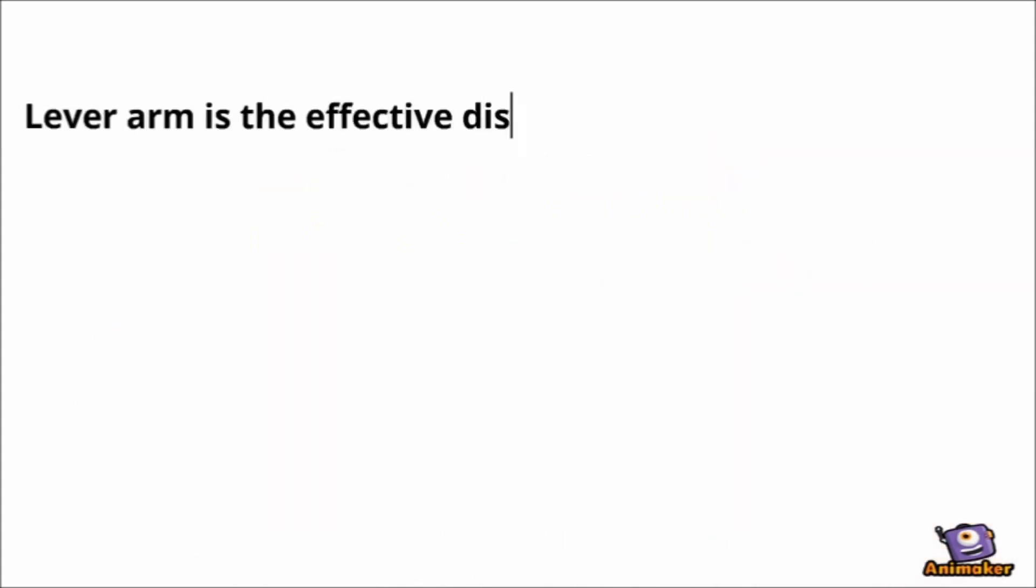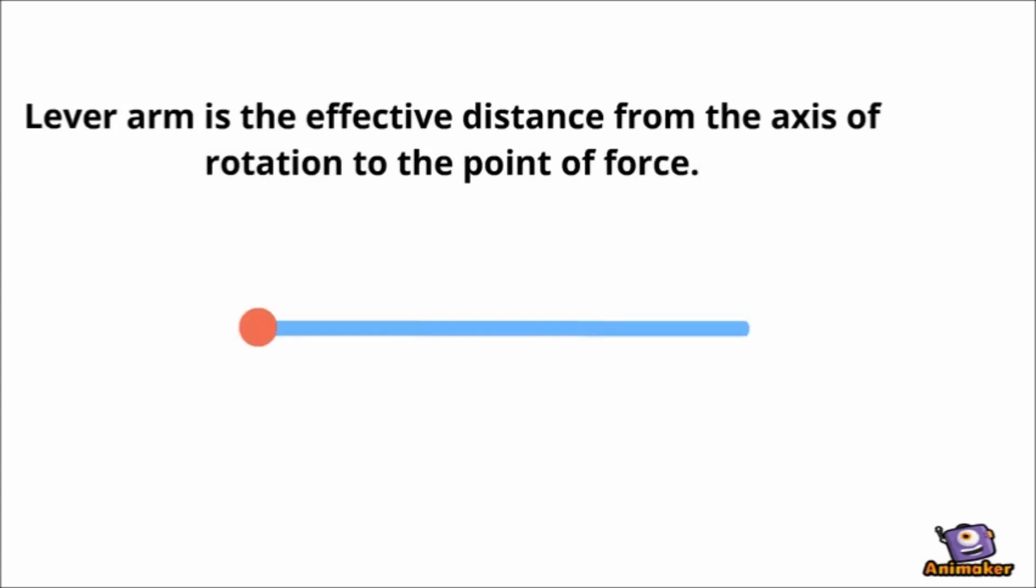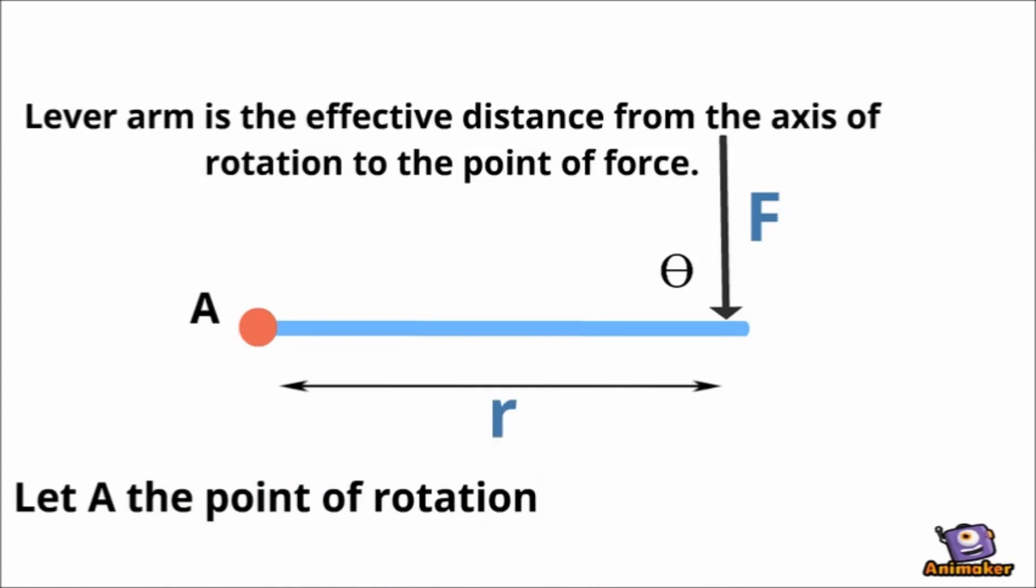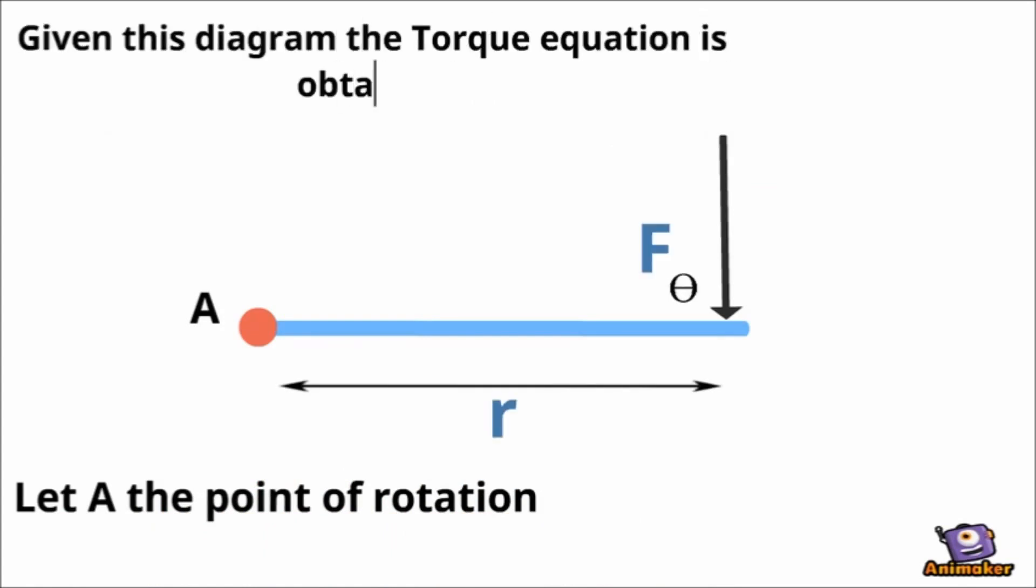Lever arm is the effective distance from the axis of rotation to the point of force. Consider the diagram. Let A is the point of rotation, the R is the length from A to the force. Given the diagram, the torque equation is obtained.